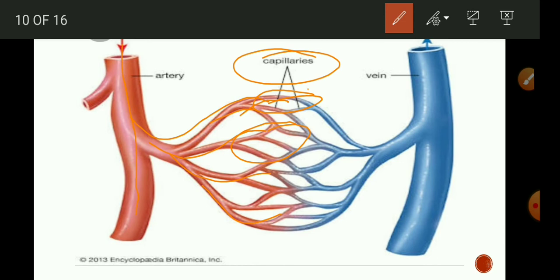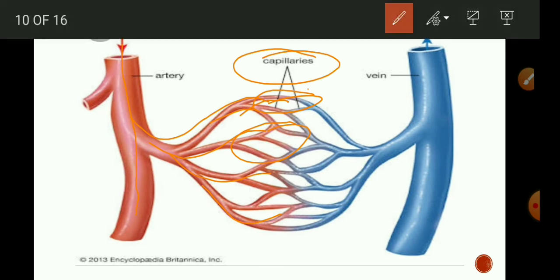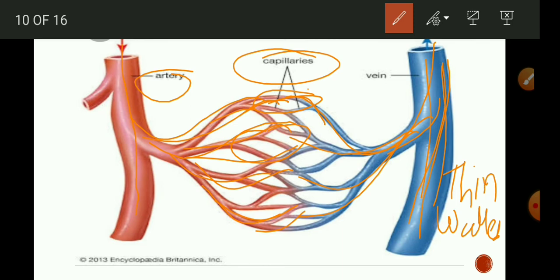The capillaries then join together to form veins. Veins are thin-walled vessels which transport blood from various body parts to the heart. Veins do not have to withstand pressure and so are thin-walled, but they have valves to prevent backflow of blood. As blood is not flowing under pressure, valves in veins are needed to avoid backward flow.